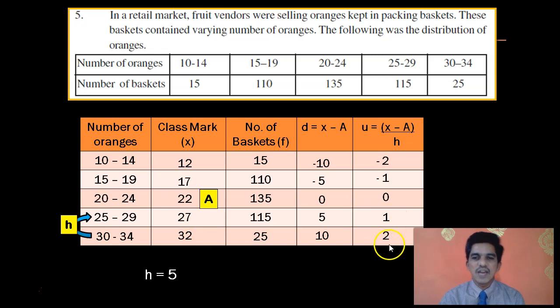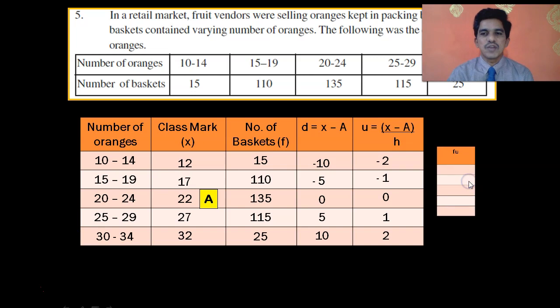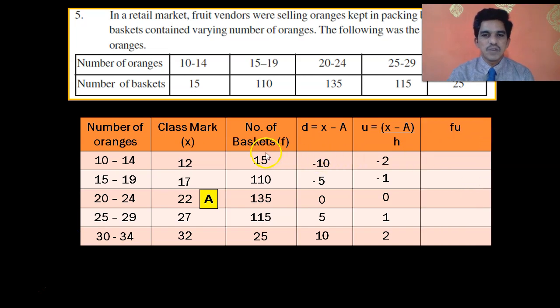So, after finding the value of u, then you have to calculate fu, that is the next step. So, let us calculate fu. F is the number of baskets, which we multiply by u. 15 into minus 2, you will have minus 30. 110 into minus 1, you will have minus 110. 135 into 0, you will have 0. 115 into 1 is 115. Lastly, 25 into 2, you will have 50.